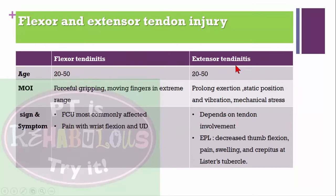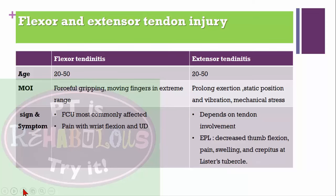Extensor tendinitis: patient is typically in the age of 20 to 50 years. Causes include prolonged static position of the wrist, use of vibratory instruments, or other mechanical stress. Signs and symptoms depend on tendon involvement. If extensor pollicis longus is affected, there is decreased thumb flexion, pain, swelling, and crepitus at Lister's tubercle.